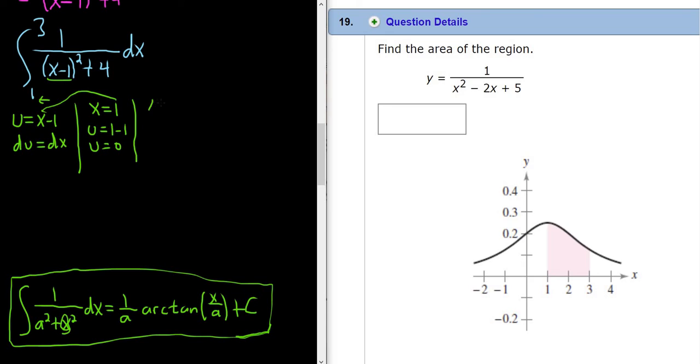Then you do the upper limit. So when x is 3, again you just take the 3 and you just plug it in there. So u equals 3 minus 1. So u equals 2. Wonderful. Let's go ahead and completely rewrite our integral.